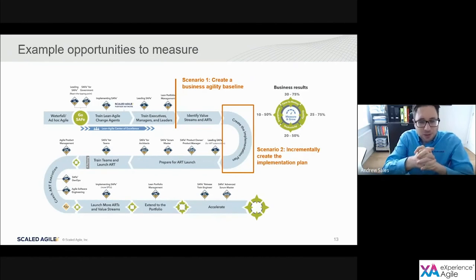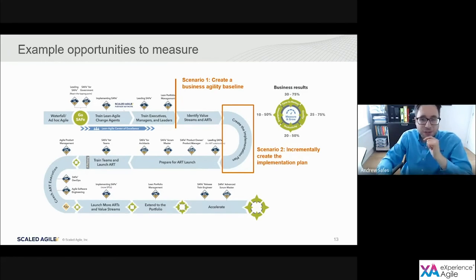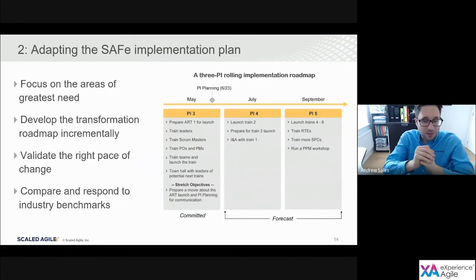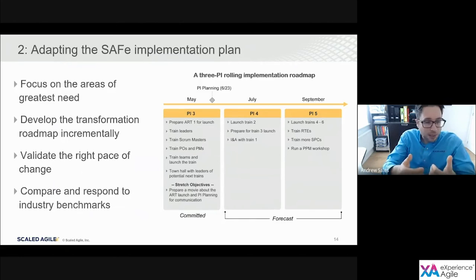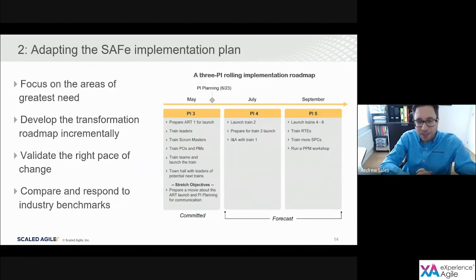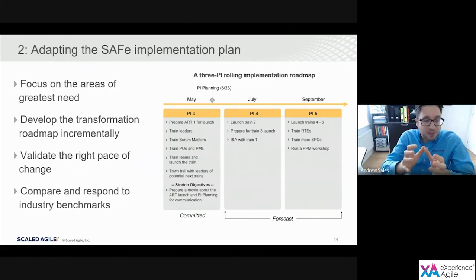The second example opportunity is using assessments to build out incrementally the implementation plan. Knowing that organizations are starting from different points — different sizes, operating in different markets — they're going to need to adapt the implementation plan to suit their needs. The assessments help us focus on the greatest need. If we run them every PI, we can develop and build out the roadmap incrementally — many organizations see great benefit in creating a three-PI rolling implementation roadmap. Importantly, assessments also help us validate the right pace of change: are the practices we're putting in place becoming self-sustaining, or are we falling back into our old ways of working?